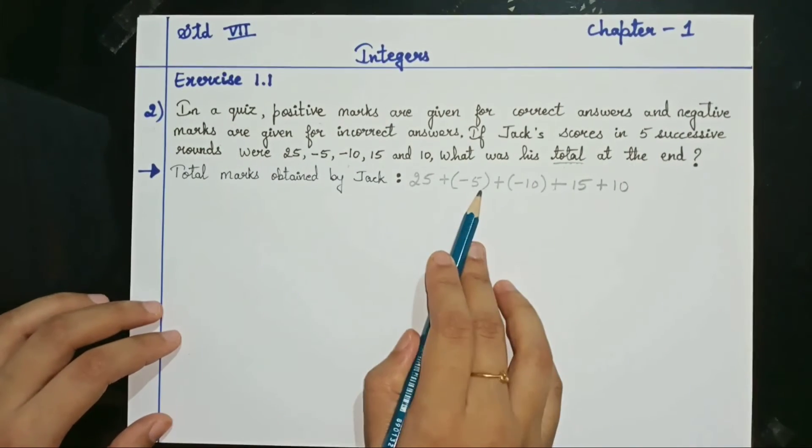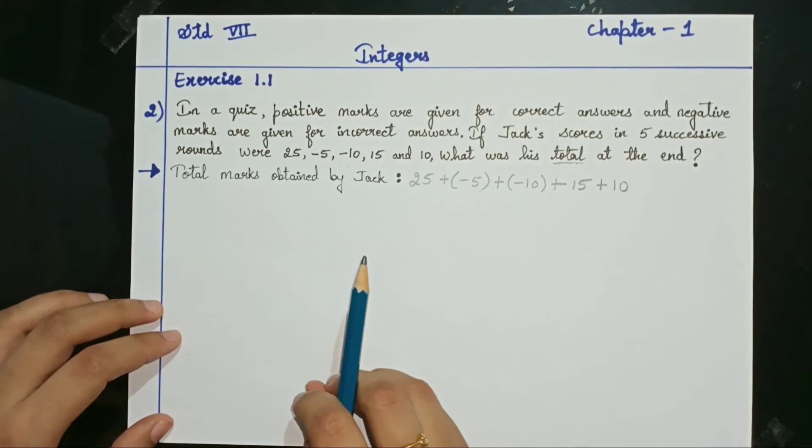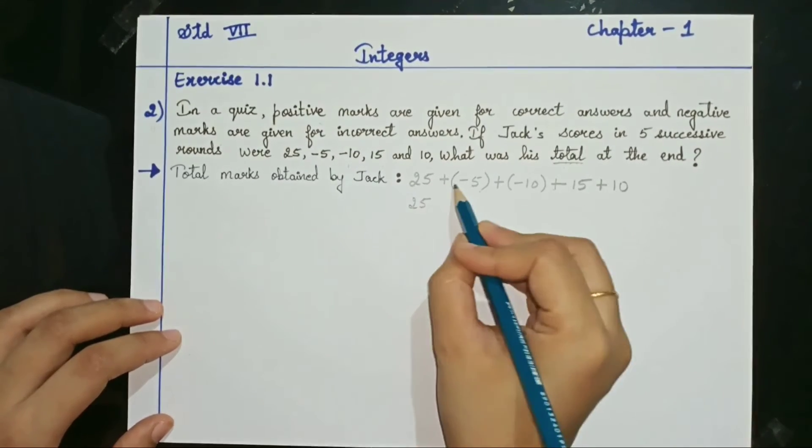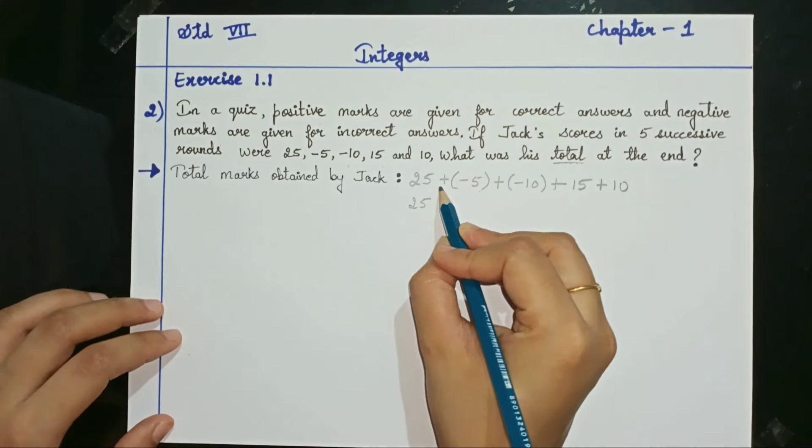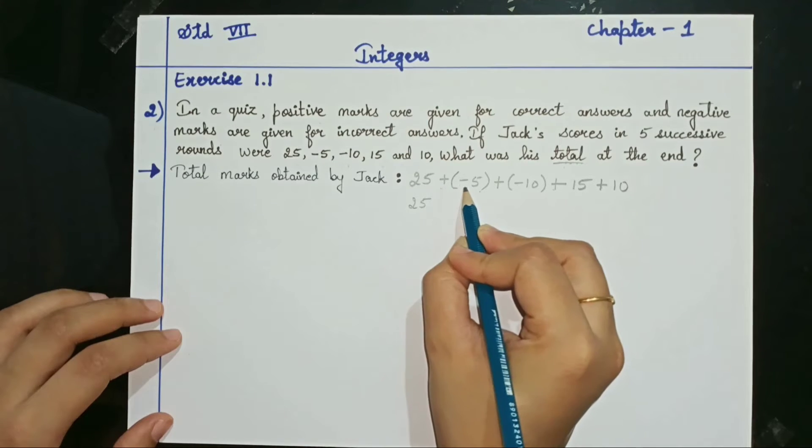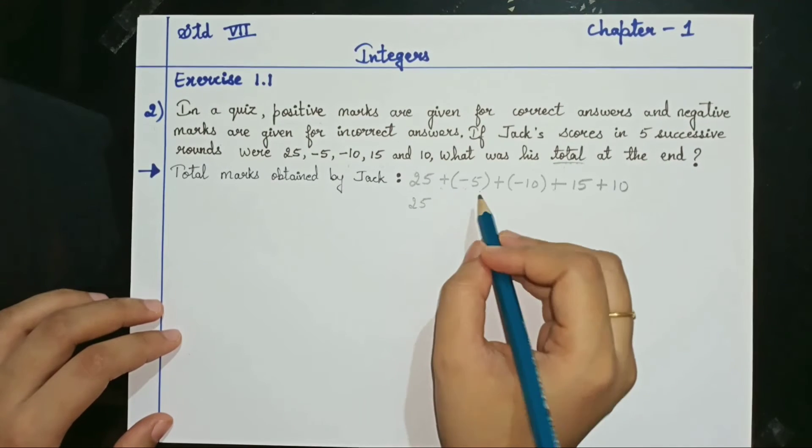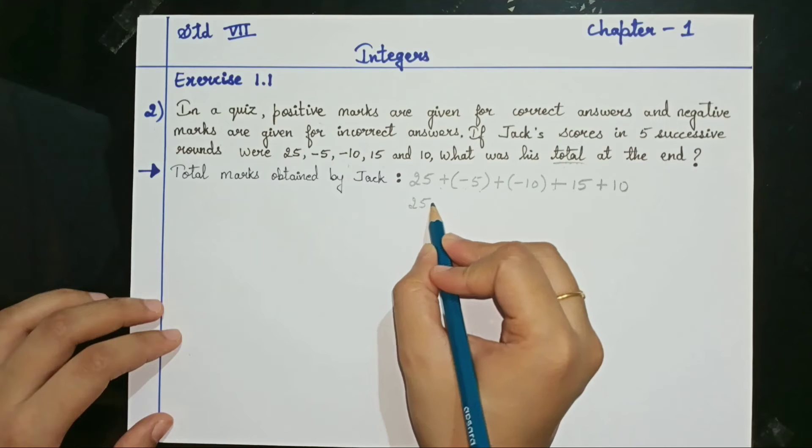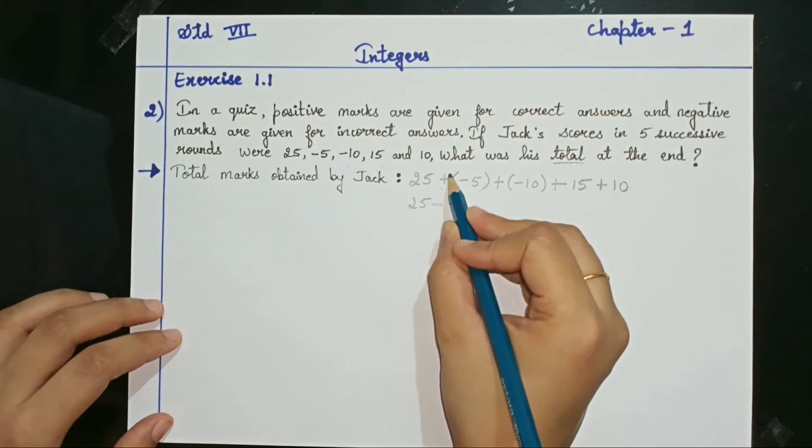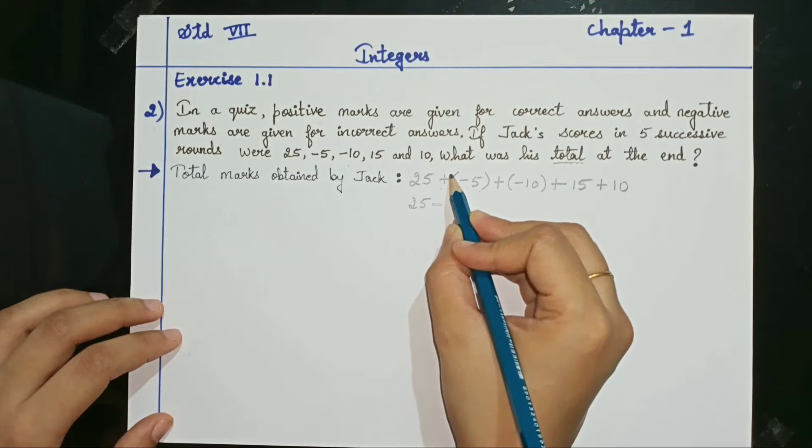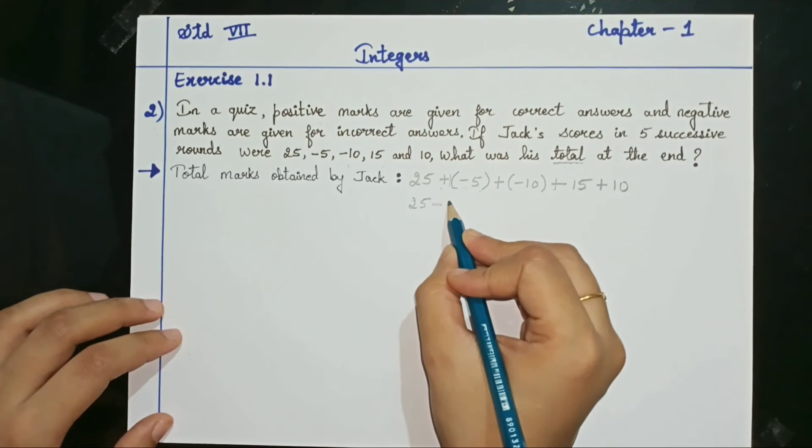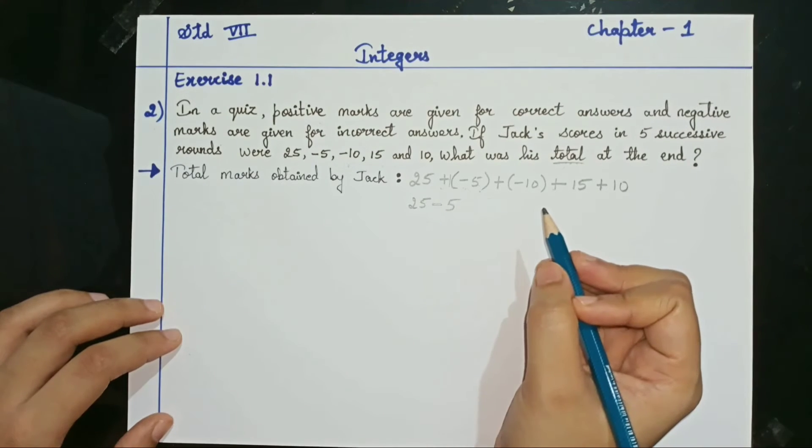Now first wherever there are brackets let us open and remove the brackets. So 25 I will write it as it is. Now outside the bracket it is positive. Inside the bracket it is negative. Signs are different. If the signs are different, in the answer you have to give minus sign. And you have to multiply. So if there is no number here given, you have to assume the number to be 1. 1 times 5 is 5.